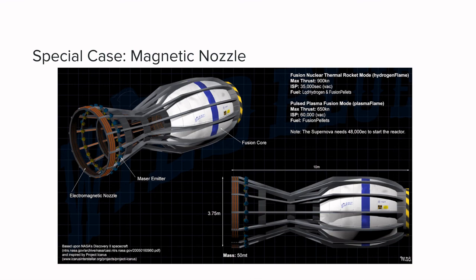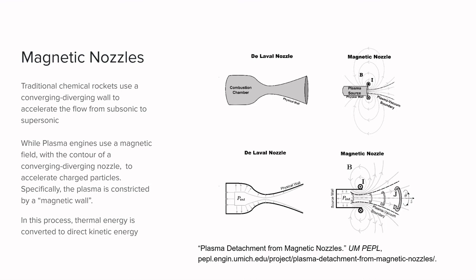But what are the main differences between a magnetic nozzle and a traditional converging-diverging nozzle? Well, for starters, a traditional chemical rocket uses a converging-diverging wall to accelerate the flow from subsonic to supersonic. In the image in the right, we can see a comparison between a converging-diverging nozzle and a magnetic nozzle.